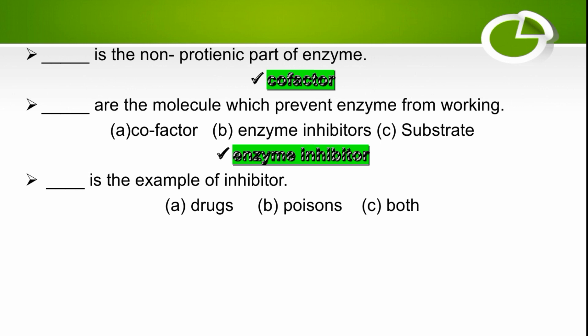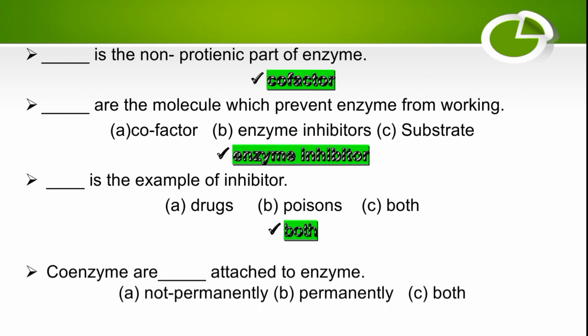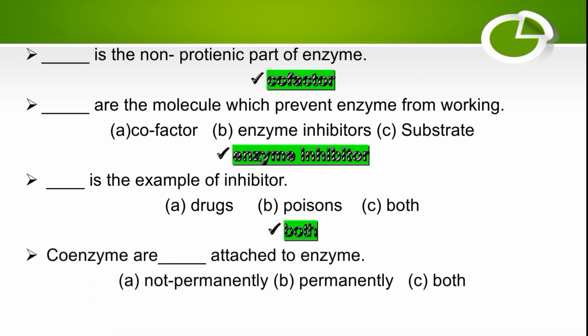Drugs and poison are both examples of inhibitors; they both can prevent enzymes from working, so the right option is both. Co-enzymes are organic molecules which are not permanently attached to enzymes — the right option is non-permanently.